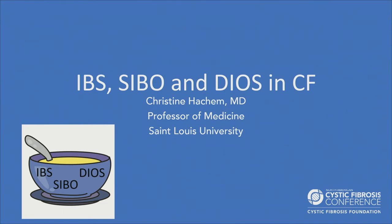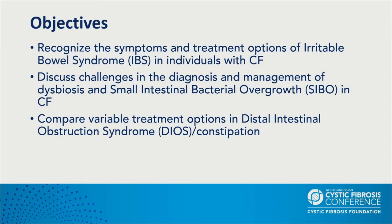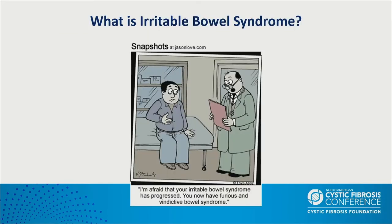Thank you for inviting me. I'll be covering IBS, SIBO, and DIOS in CF. My objectives are to recognize symptoms and treatment options for IBS in CF, discuss challenges in diagnosing and managing dysbiosis and small intestinal bacterial overgrowth in CF, and compare variable treatment options in DIOS and constipation. First, what is irritable bowel syndrome? The Rome 4 definition requires recurrent abdominal pain more than one day per week in the past three months, with two of three features: improvement with defecation, onset associated with a change in stool frequency, and/or onset with a change in stool form.